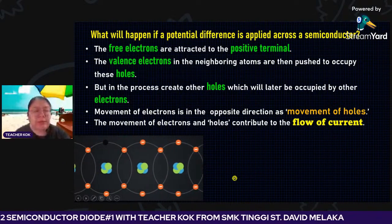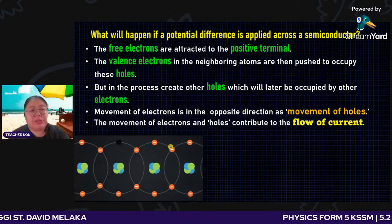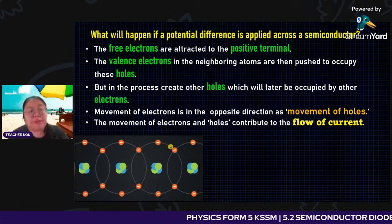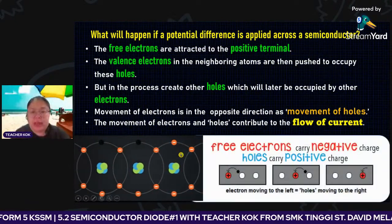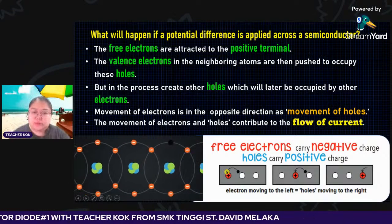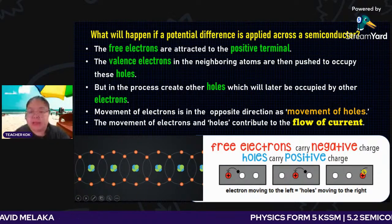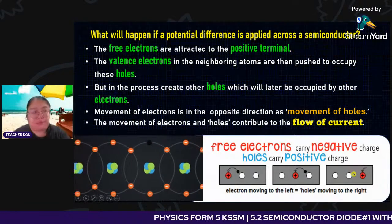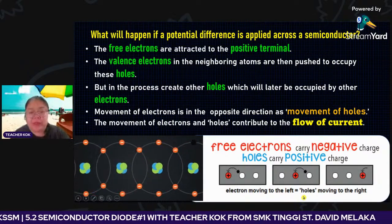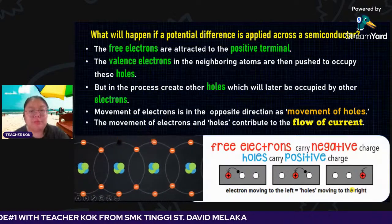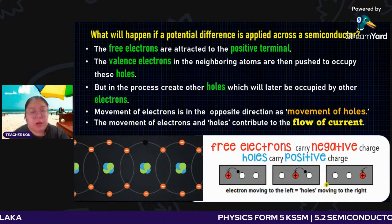You can see in the diagram: the hole is here, and the electron keeps jumping. When the electron keeps jumping, the hole appears to move in the opposite direction — but actually the hole never moves; only the electron moves to fill the hole. Free electron carries negative charge; hole carries positive charge. Electron moving to the left equals hole moving to the right. This is the flow of current when a potential difference is applied to the semiconductor.